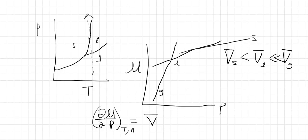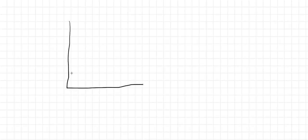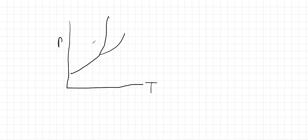Our chemical potential must go up as we increase pressure, but we can increase it more slowly by hopping to other phase lines. We can use this to explain how gases sublime. Let's see how sublimation works.